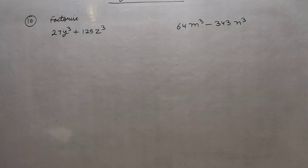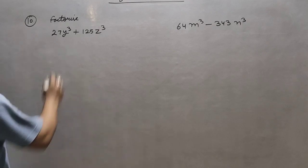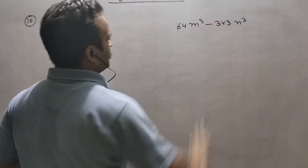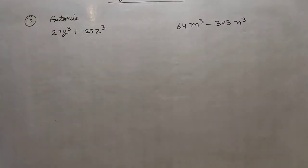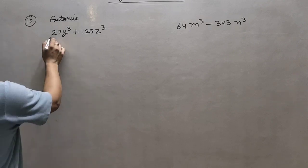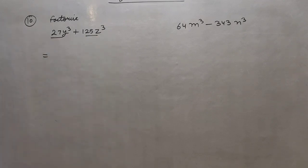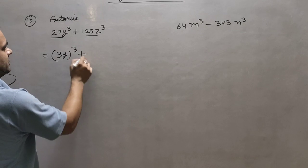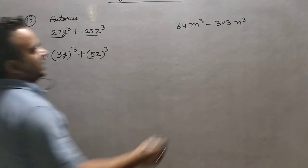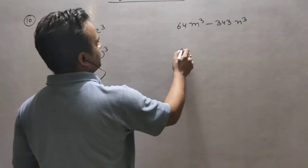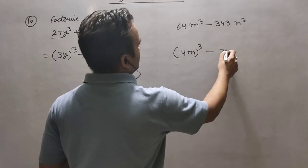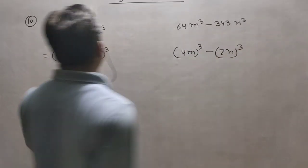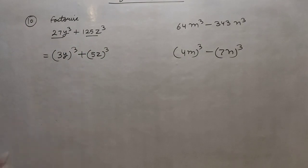Now question number 10: 27y³ + 125z³. You can see it is related to the a³ + b³ identity. All terms need to be in perfect cube form — they are not written as perfect cubes, so we will rewrite them. It will be (3y)³ + (5z)³. Similarly, for the other part it is (4m)³ - (7n)³. Now it is clearly visible that a is 3y and b is 5z.